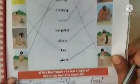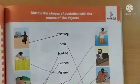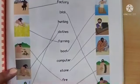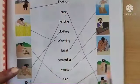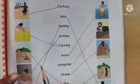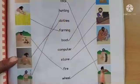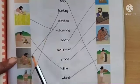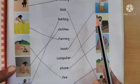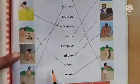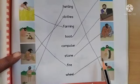Now we shall do a few activities regarding the same. Let us move on to page number 69, where we have an activity to match the stages of evolution with the names of objects. Here we have a few names and also pictures — we have to match them respectively: factory, brick, hunting, clothes, farming, boat, computer, stone, fire, and finally the wheel.